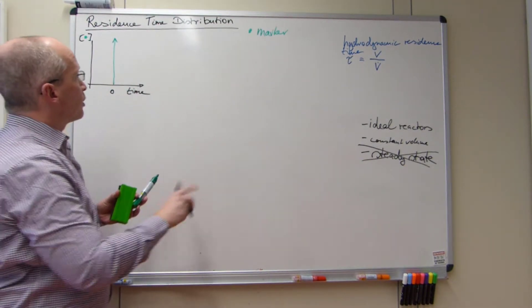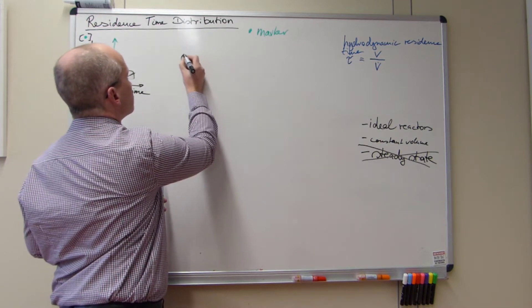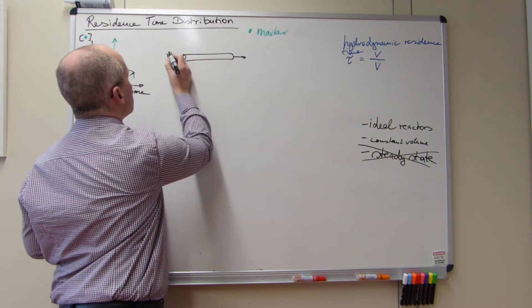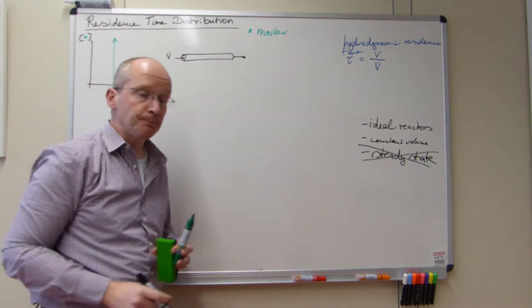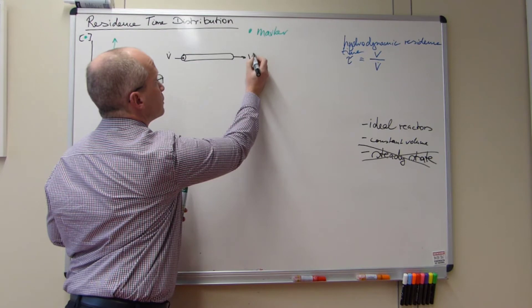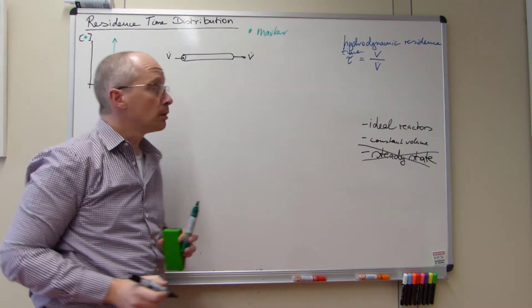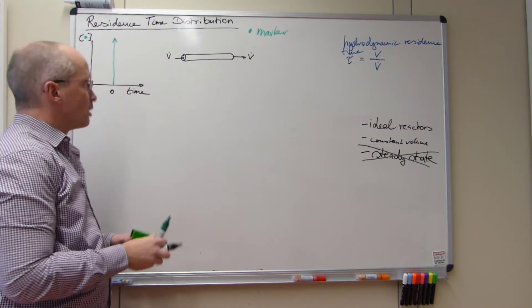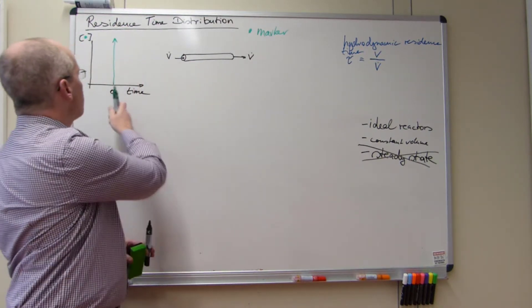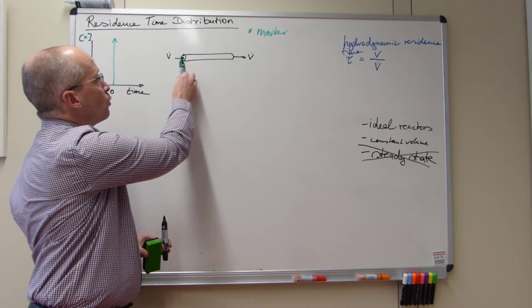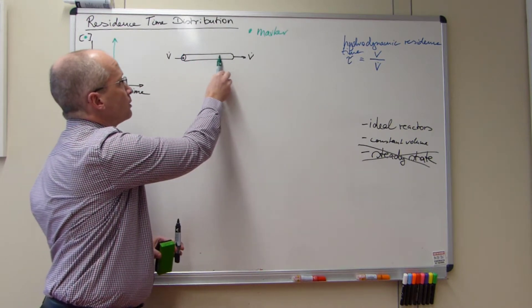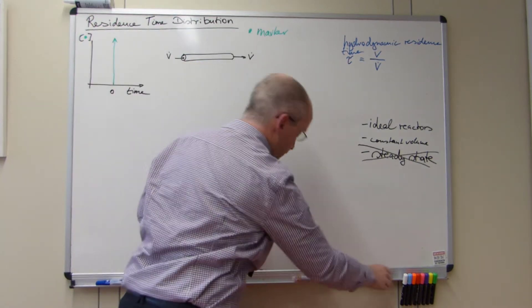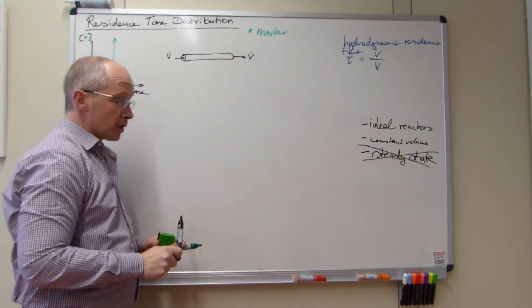So let's look what happens to our plug flow reactor. Volume flow in and out. So what happens, rather basically, this will act as a time machine. Everything which we introduced here will, in an ideal reactor, will be passed from one of these cross sections to the other.